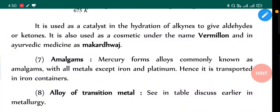Amalgams: Mercury forms alloys commonly known as amalgams. Usually this name is given to paste-like substances with all metals except iron and platinum. Hence it is transported in iron containers. That means if you have any other metal container it will create paste-like substance with it - that means it will destroy the container by forming amalgam of metal used in container.